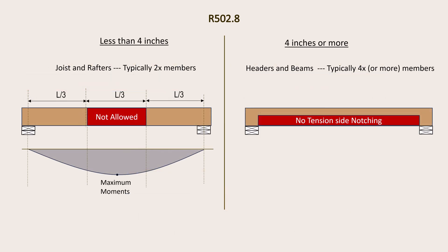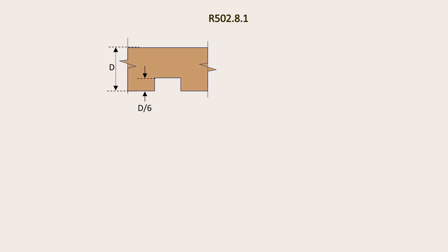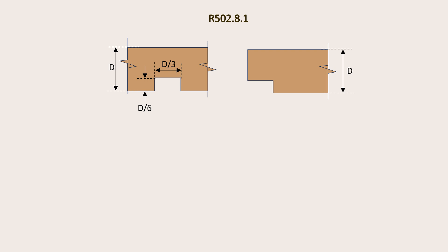Therefore, for members that are less than four inches in nominal thickness, notches are permitted outside of the middle one-third of the members, while for members equal to or more than four inches in nominal thickness, notching is permitted at the supports. For locations where notches are permitted, Section R-502.8.1 specifies that the depth of notches should be limited to one-sixth of the member's actual depth while the width should be limited to one-third of the member depth. The same section also specifies that members may be notched up to one-quarter of the member depth at the supports.